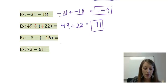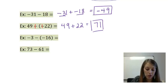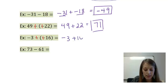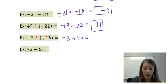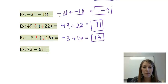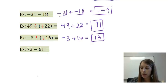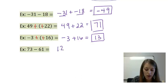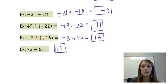My third example again has double negatives, so the first thing I do is cancel those out, which gives me negative 3 plus 16. They're opposite signs, so I subtract them. 16 minus 3 gives me 13. The larger number is positive, so my final answer is positive 13. My last example is 73 minus 61 — nothing out of the ordinary. We take the larger minus the smaller; the difference is 12. My larger number was positive, so my final answer is positive 12.